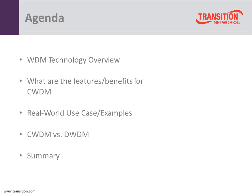There are actually two terms here: CWDM and DWDM. CWDM is coarse wave division multiplexing and DWDM is dense wave division multiplexing. We'll take a look at how they correspond to each other.